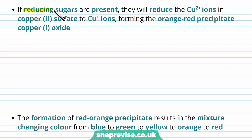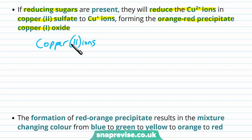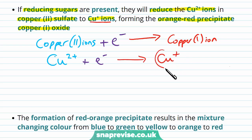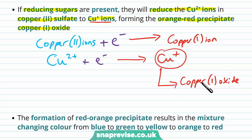If our sample contains reducing sugars — monosaccharides or disaccharides — they will reduce the copper two plus ions found in the copper sulfate down to copper one plus ions. This forms an orangey-red precipitate called copper oxide. In equation form: Cu²⁺ ions receive an electron donated from the sugar, forming Cu⁺ ions. These copper one plus ions then form copper one oxide, which is this orangey-red precipitate colour.